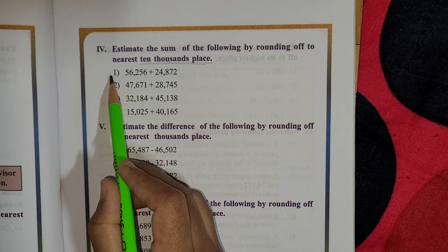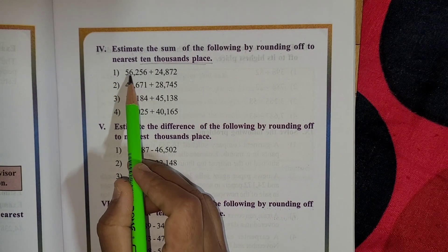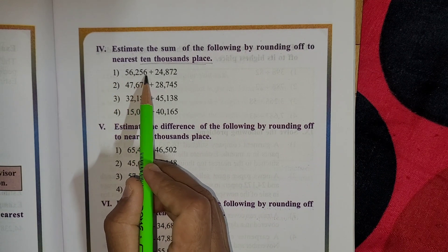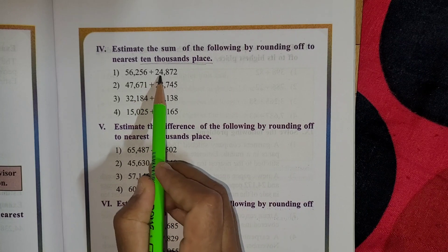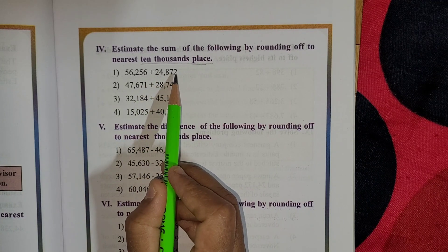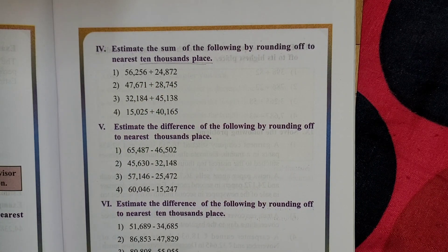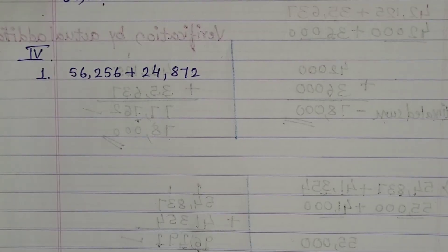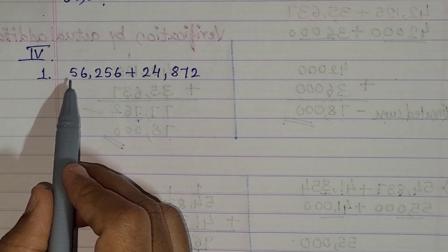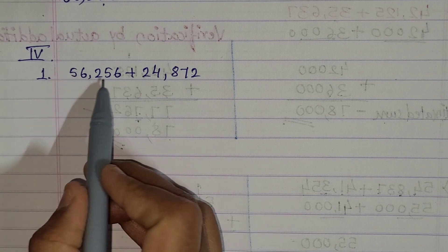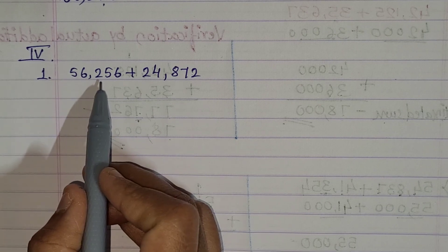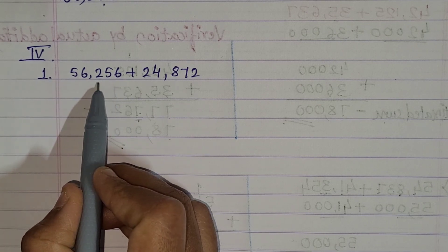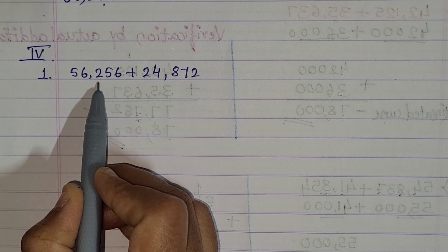We will take the first example: 56,256 plus 24,872. I have written the same example here. What you have to do first is round off this number to the nearest ten thousand place. You know how to do it, right?